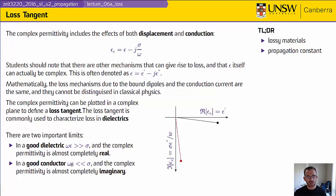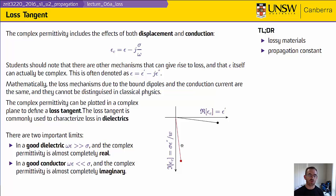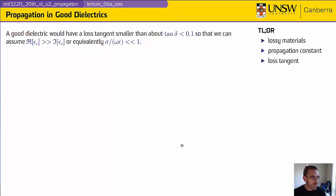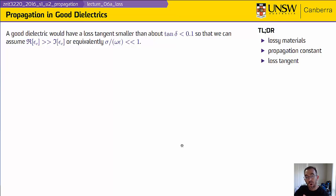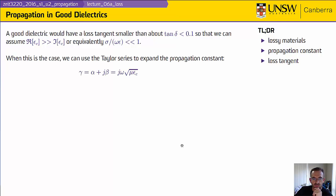I can also have a good conductor. In a good conductor, the permittivity is much, much less than sigma over omega, so the effects of conduction dominate and the angle in the complex plane is close to 90 degrees. We typically don't use loss tangent to describe these types of materials — we actually use their conductivity. The assumption for a good dielectric is that the loss tangent is less than about 0.1. Typical numbers are 0.01 to 0.001, and sigma over omega epsilon is much, much less than 1.